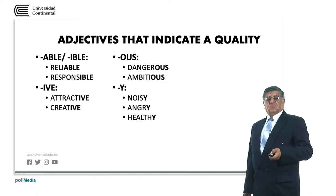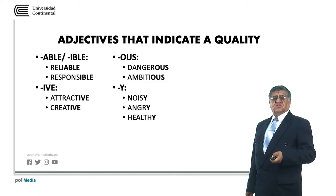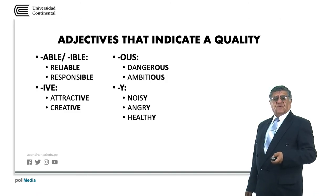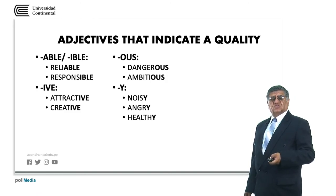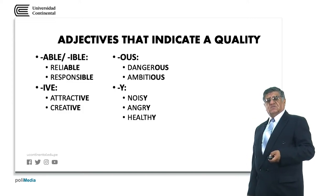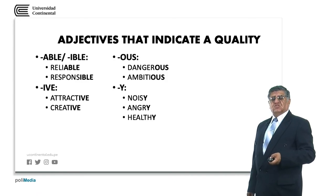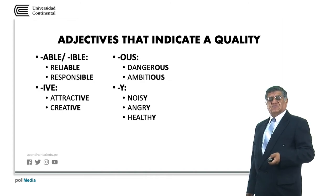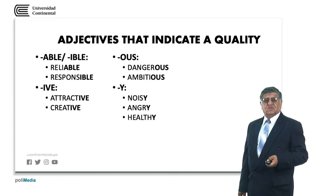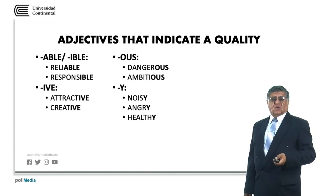For quality adjectives: reliable means something you can rely on — it's trustworthy. Responsible means somebody who has responsibility in their actions. Attractive means someone who attracts. Creative means someone who creates. Dangerous means something that has danger. Ambitious means a person who wants and strives for many things. Noisy means full of noise. Angry means full of anger. Healthy means full of health.